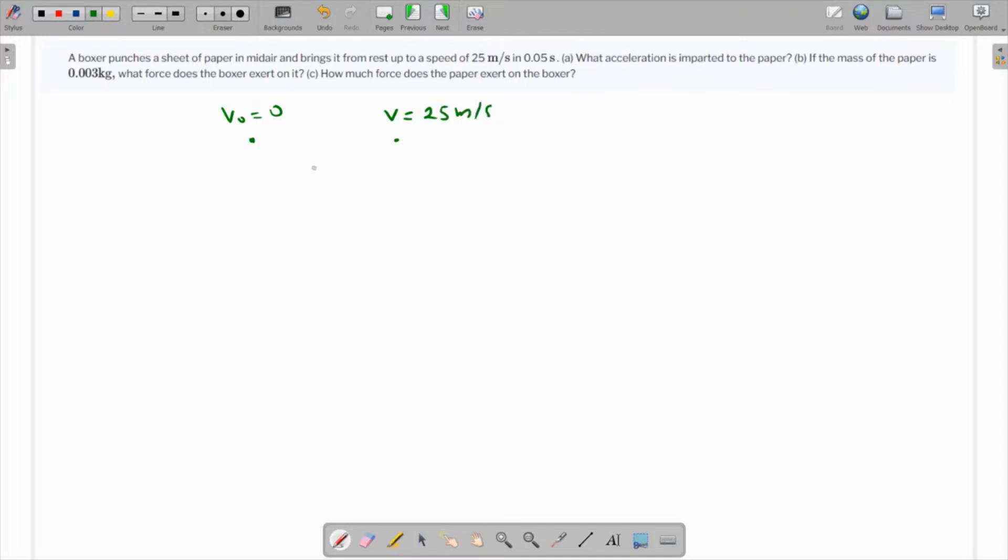And the time is 0.05 seconds. So what is the acceleration? Pretty easy, just use the first equation of motion: V equals V naught plus at. So V is the final velocity which is 25, V naught is the initial which is 0, a is something which we have to find, and t is 0.05. So the value of the acceleration comes out as 25 over 0.05, which is 500. It's a very big value, 500 meters per second squared.